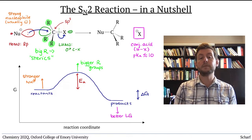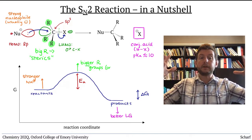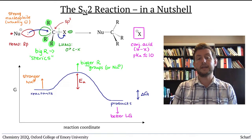Similar arguments can be made about the nucleophile. The bigger the nucleophile, the slower the SN2 reaction.